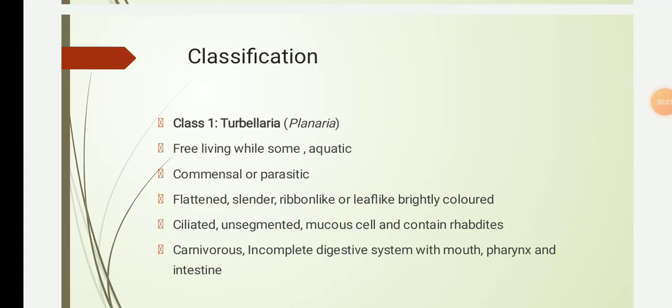Today we will study about the classification of Phylum Platyhelminthes. This phylum includes organisms consisting of about 50,000 species, and they are classified into three classes: Class 1 Turbellaria, which includes ciliated flatworms that are generally free-living; Class 2 Trematoda, which are non-ciliated parasitic flatworms or flukes; and Class 3 Cestoda, which are all endoparasitic flatworms or tapeworms.